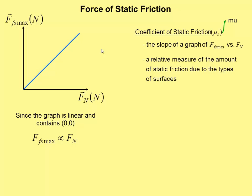Surfaces that naturally have more static friction, rougher surfaces if you will, will have steeper slopes, bigger coefficients. Surfaces which are smoother, don't take as much force to get something going, they'll have less steep graphs and lower slopes.